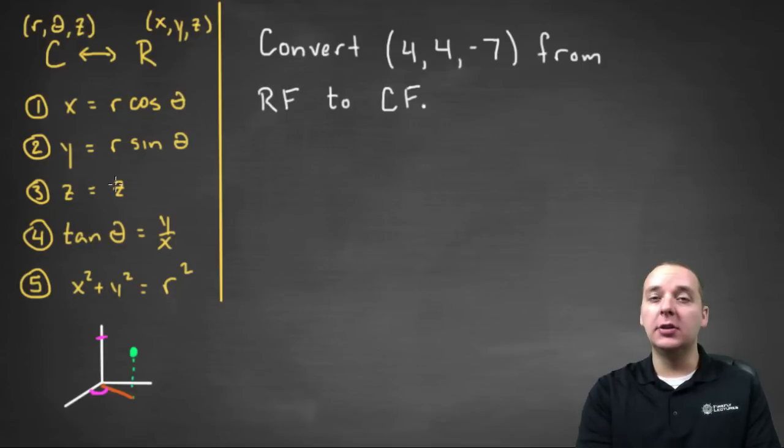So here's a reminder of the conversions that we've already derived. If we're converting from rectangular form to cylindrical form, that means this point (4, 4, -7) is currently rectangular form, meaning this is X, this is Y, and this is Z.